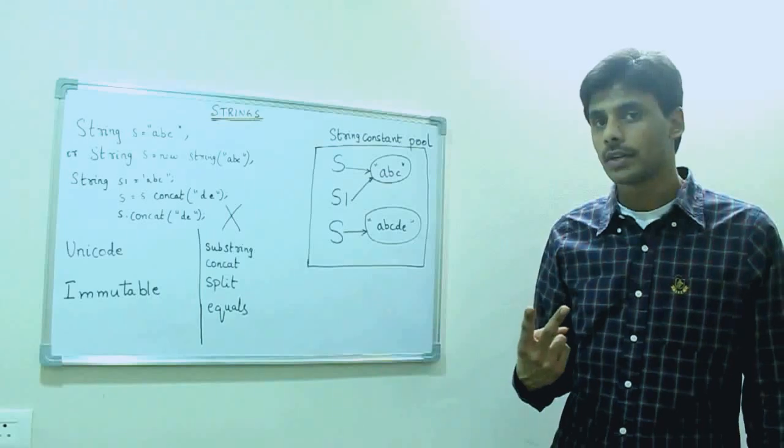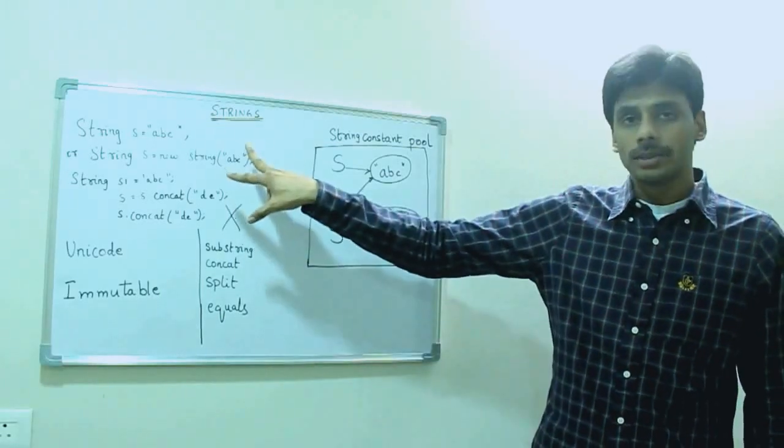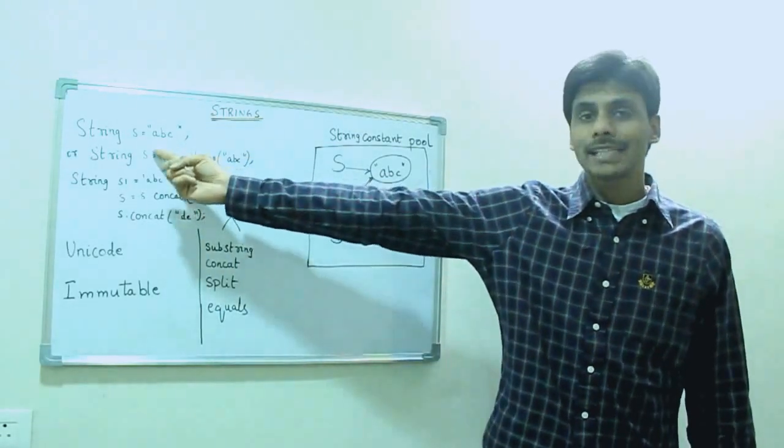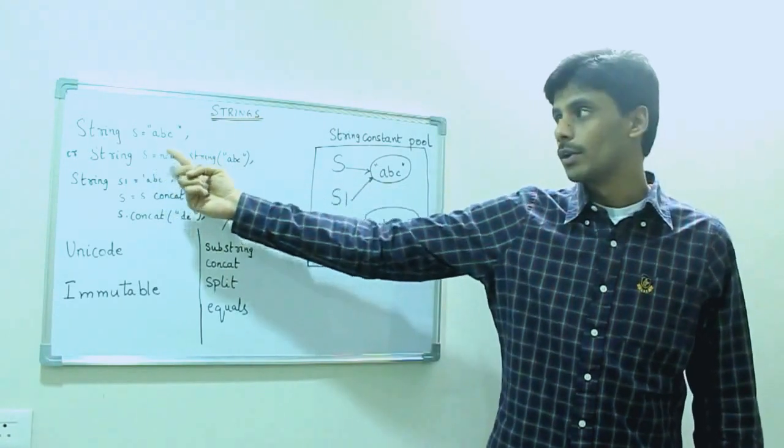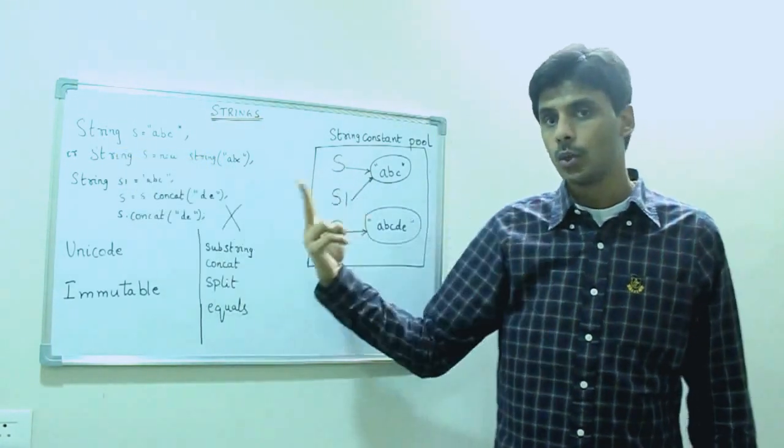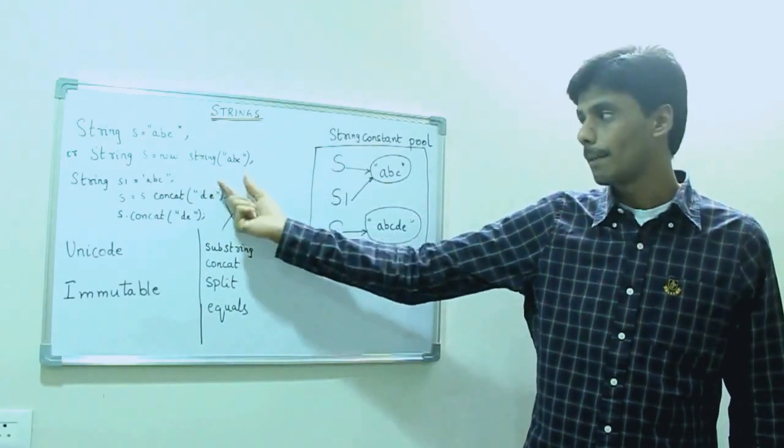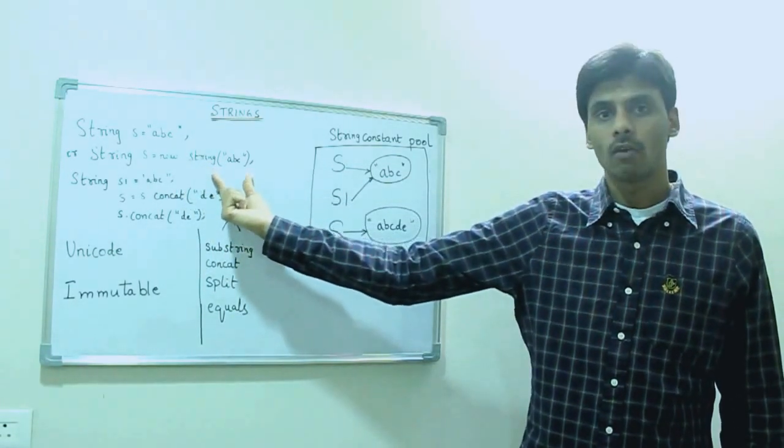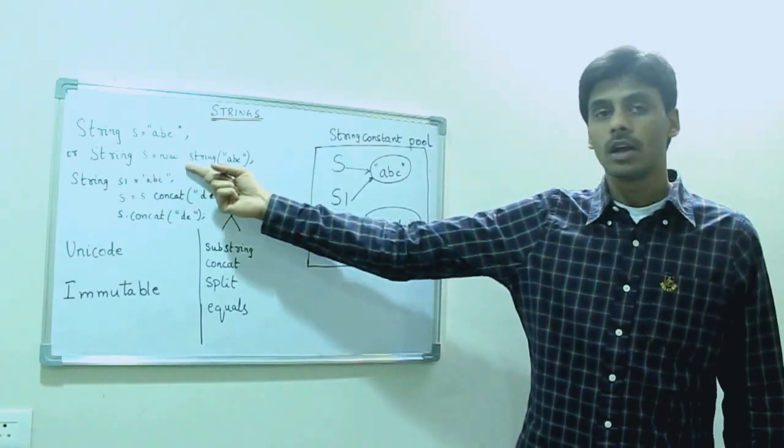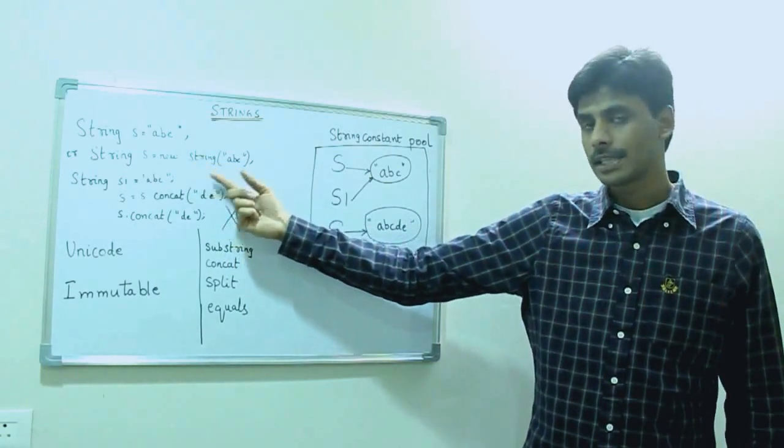There are two ways in which we can create string objects. One, we can directly assign a string literal value to a variable of type string. Two, we can create an instance of the string class and pass in the string literal value to the constructor as a constructor argument.